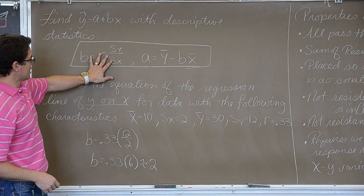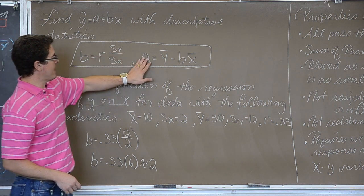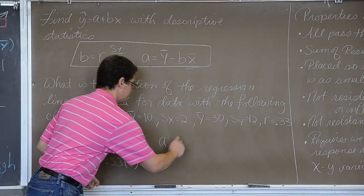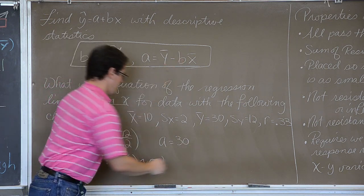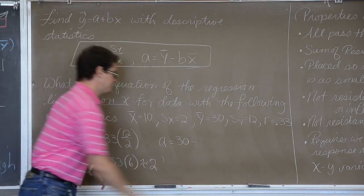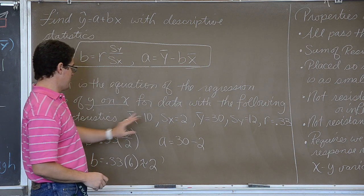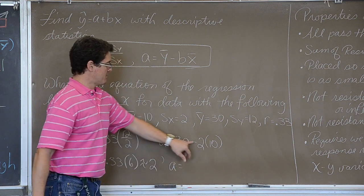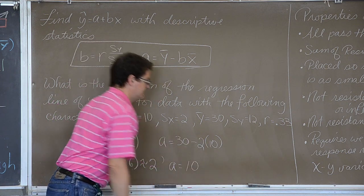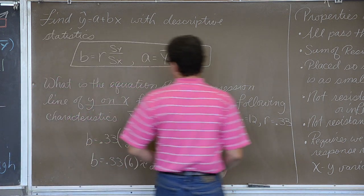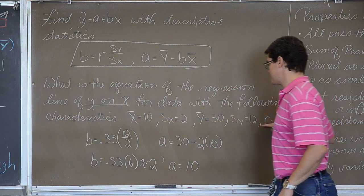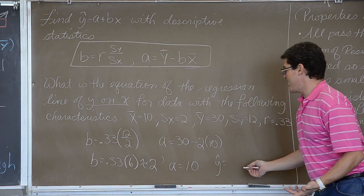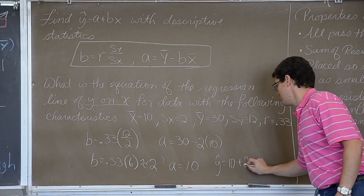Okay, well now I have got my slope in my regression line. A is equal to the mean of y, which is 30, minus b, which we just found to be 2, times the mean of x, which I have given to you as a value of 10. So that means that A is going to be 30 minus 20, or 10. So my regression line going through a scatter plot with these characteristics would be y hat equals A plus Bx.